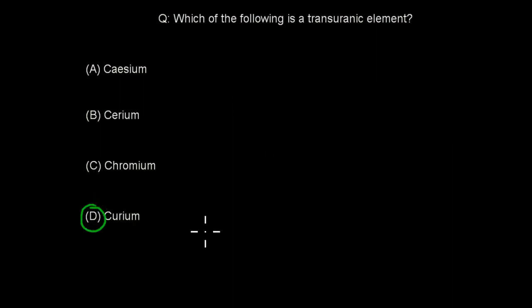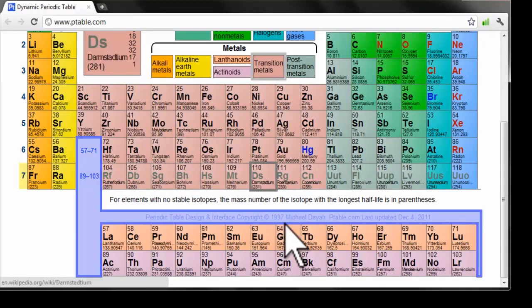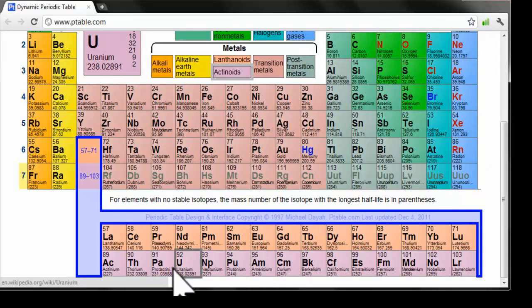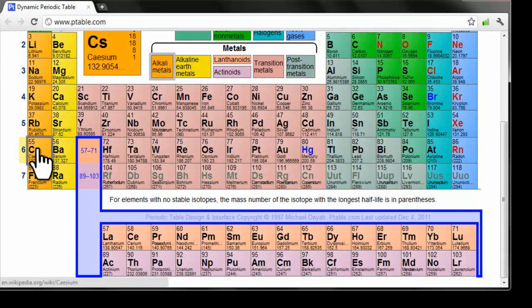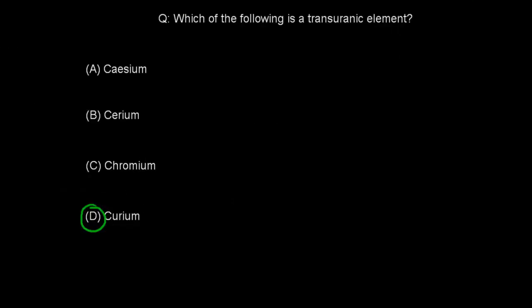The correct answer was Curium. Looking at our periodic table, you have to check the atomic number — anything with an atomic number greater than 92 is a transuranic element. Curium is 96, so that's a transuranic element. Cerium is 58, not transuranic. Cesium is 55, also not transuranic. And Chromium is 24, also not transuranic. Only Curium had an atomic number greater than 92, which is the requirement for a transuranic element.